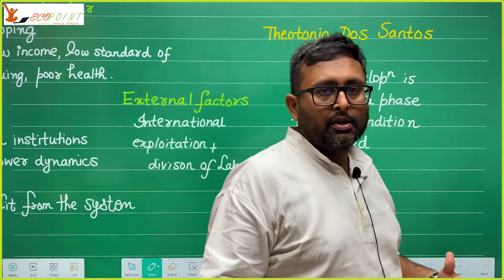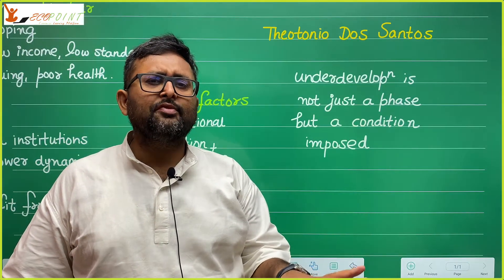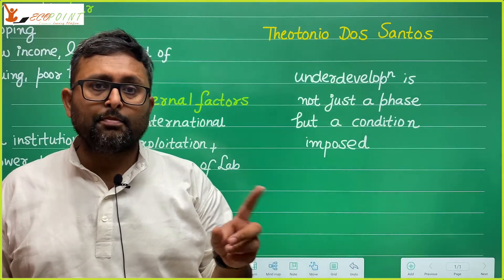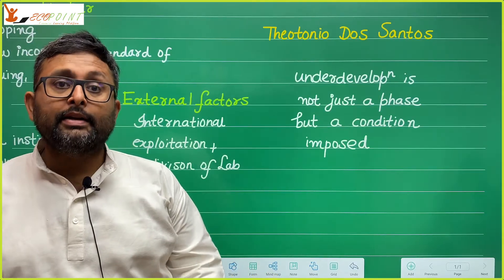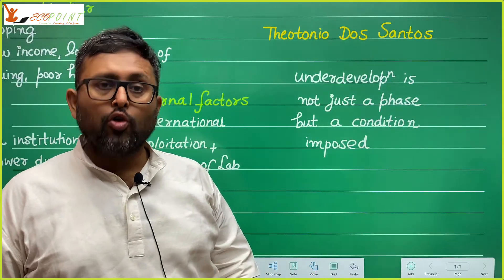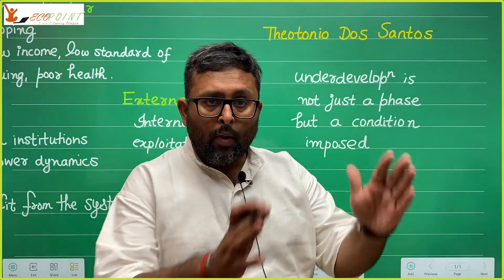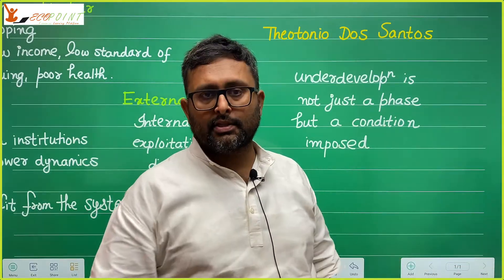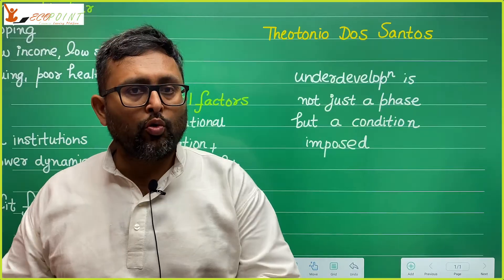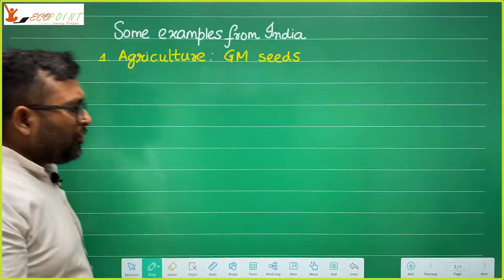Paul St. Thomas is a very prominent figure in the external dependency school. He says that underdevelopment is not just a phase that will go away over time — it is a condition which is imposed. Developed countries and international agencies impose these conditions on developing countries so that core countries can develop very fast while periphery countries remain stagnant and do not grow, as long as this unequal relationship persists.